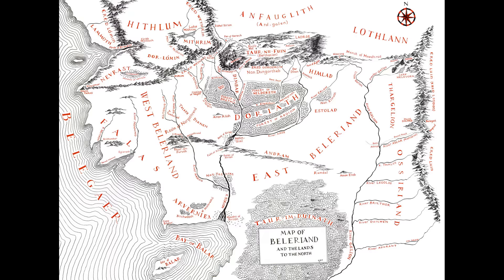The Noldor came in boats and landed on the shores of Beleriand, where the Sindar primarily resided within Doriath. When the Noldor came back, Melkor hadn't set up massive armies yet, so the Sindar had a relatively peaceful existence. They turned themselves to creation as well and had their own form of writing by the time the Noldor arrived — called the Alphabet of Dairon — which is more rune-based. This was adapted and edited, and very much influenced by Tengwar when it arrived with the Noldor.